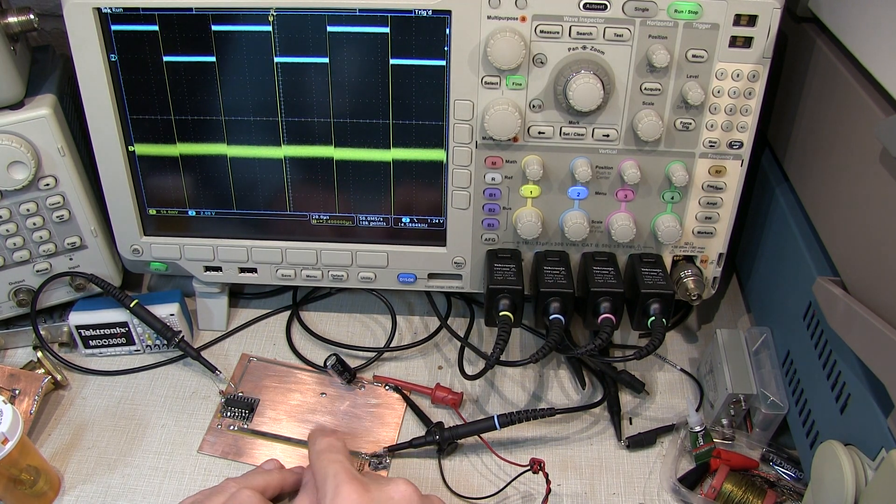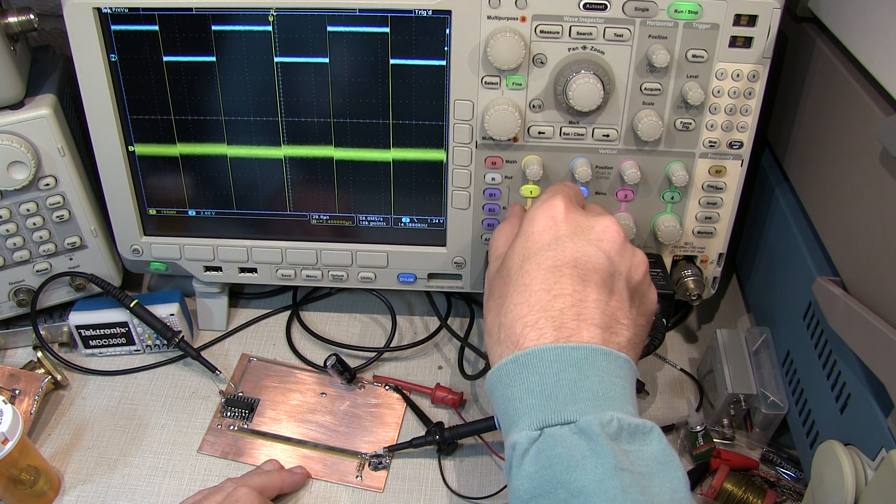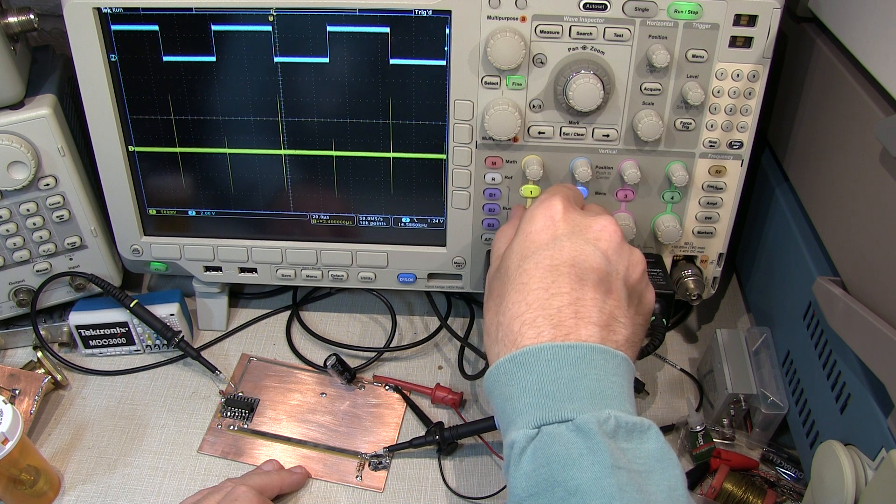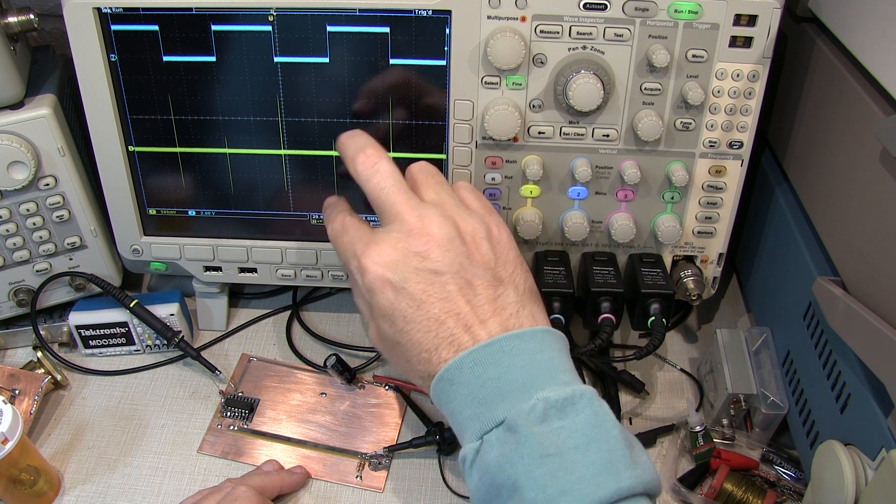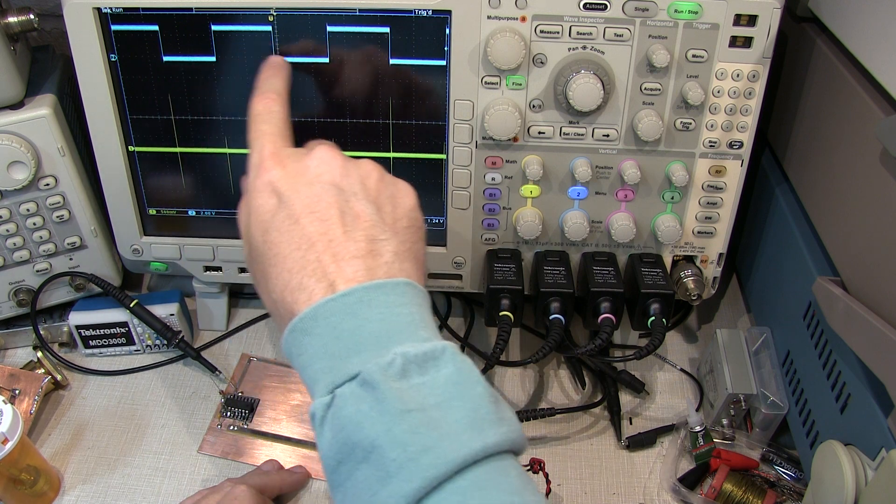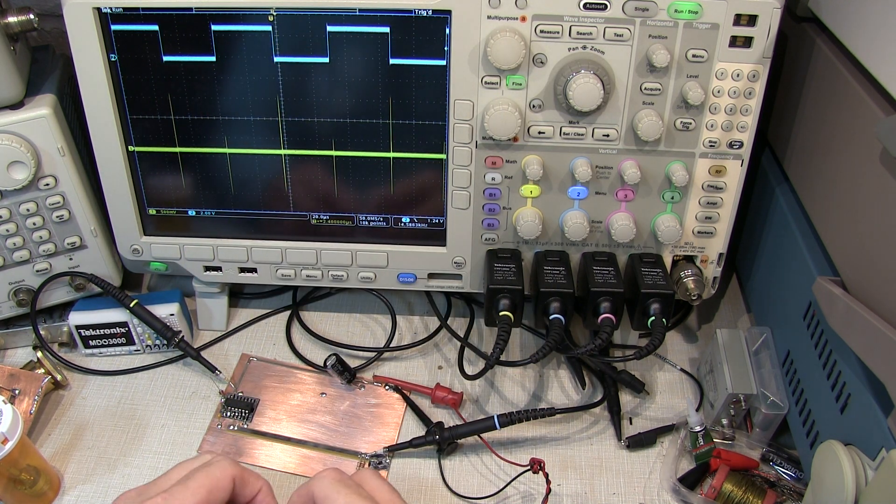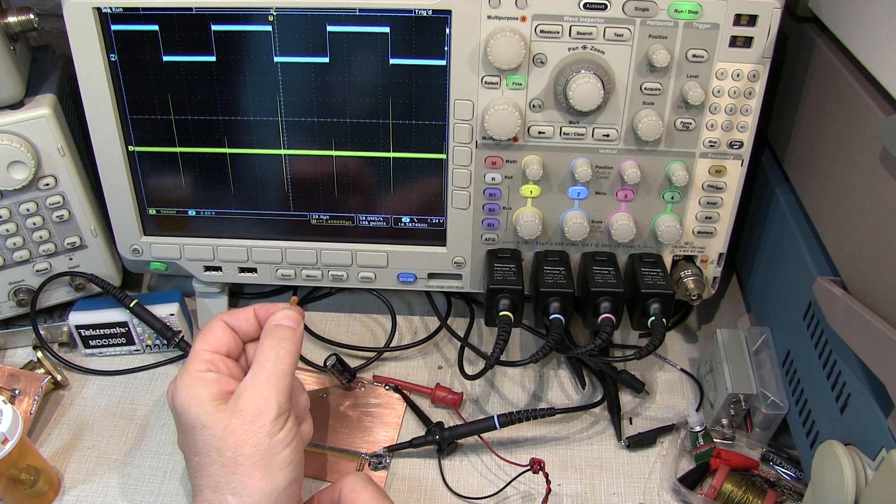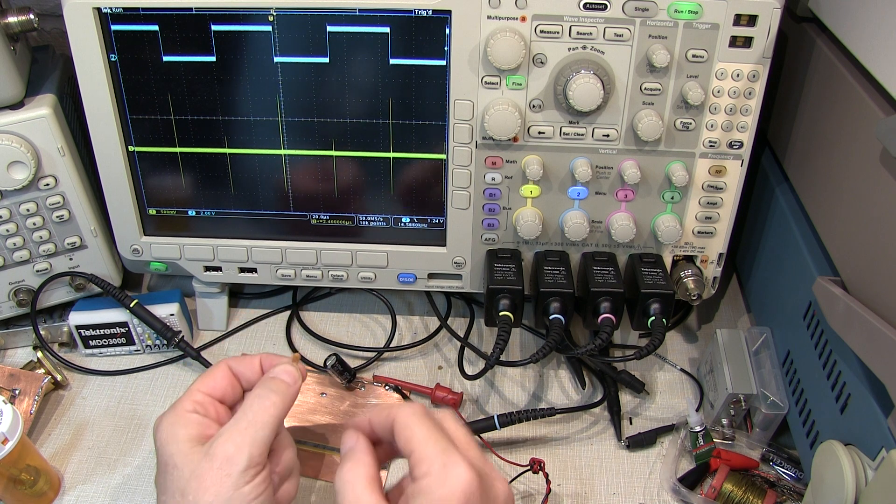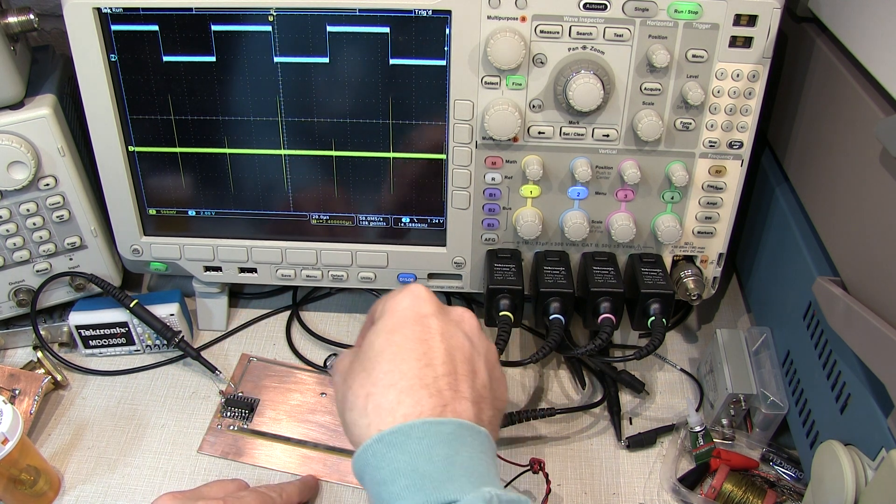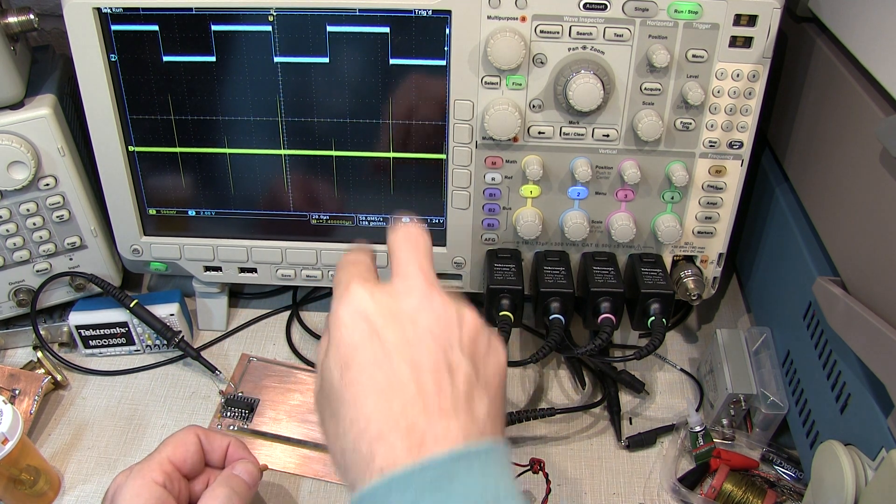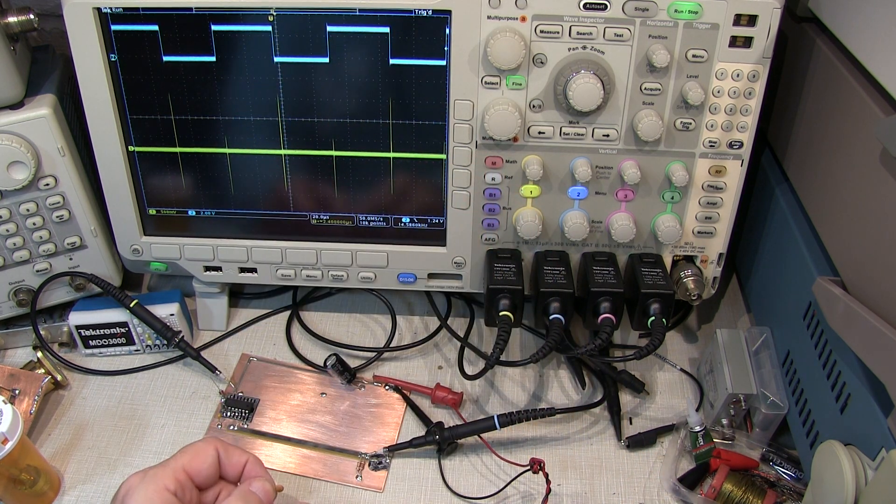With our bulk capacitor in place, let's change our vertical scale here so that I can now see the extent of the high frequency noise associated with the edges of our waveform. And we'll take a look at the placement of the high frequency decoupling cap and how the location of this on the board will affect how well it works in reducing that noise.